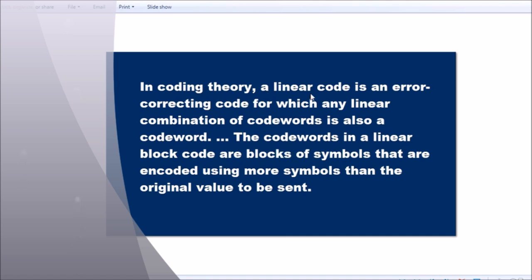So see what is linear block code. In coding theory, a linear block code or linear code is an error-correcting code for which any linear combination of codewords is also a codeword. The codewords in a linear block code are blocks of symbols that are encoded using more symbols than the original value to be sent.